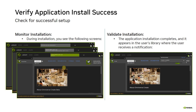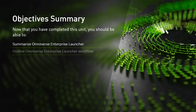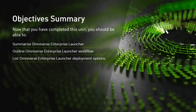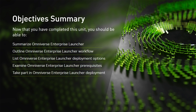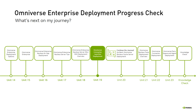Now that you understand how to deploy the Enterprise Launcher on either Windows or Ubuntu, let's review the objectives for this unit. After completing this unit, you should be able to summarize the Enterprise Launcher, outline its workflow, list the various deployment options, examine prerequisites based on target operating system, take part in deployment on supported platforms, and demonstrate deployment of your first application through the Enterprise Launcher. Next up on your journey is Omniverse Nucleus Cache Server deployment, which details the deployment of a Nucleus cache server to optimize the user experience. See you in the next unit!